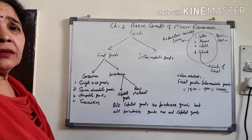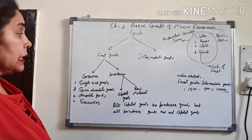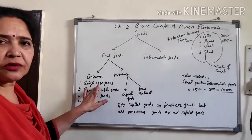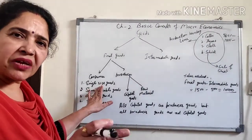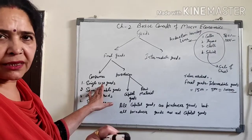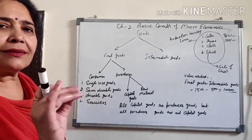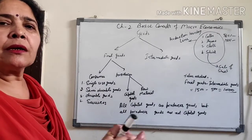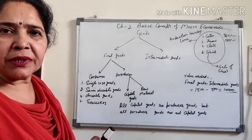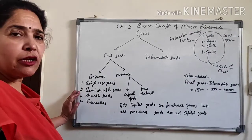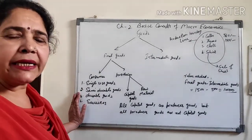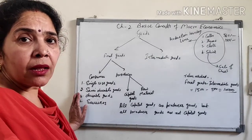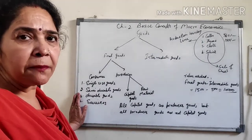Consumer goods are those used by the household sector, and they are of four types. The first is single-use goods — for example, electricity consumed by fans, or LPG consumed for cooking food. The second is semi-durable goods, which do not have a fixed time limit — for example, crockery, which lasts until it breaks.